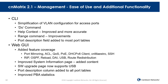CLI improvements are an ongoing effort. In 2.1, we have made some important updates based on feedback. We've simplified the VLAN configuration for access ports, added the do command, improved the help context to be more accurate, made the range command more user friendly, and added the port description field to most port tables so when you display a large table of ports, the port description field is included as well.